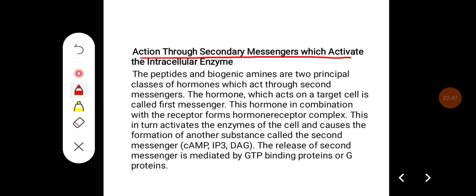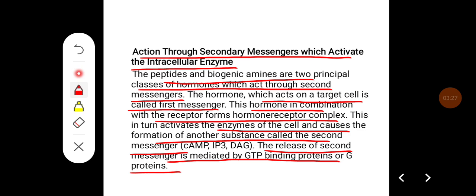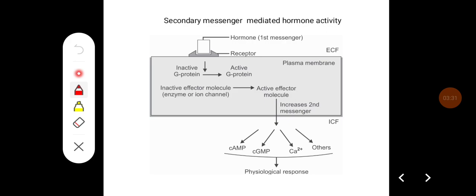Action through secondary messengers activates the intracellular enzyme. Peptides and biogenic amines are two principal classes of hormones which act through second messengers. The hormone which acts on the target cell is called the first messenger. This hormone in combination with the receptor forms a hormone-receptor complex, which in turn activates enzymes of the cell and causes the formation of another substance called the second messenger — for example, cyclic AMP, IP3, or diacylglycerol. The release of the second messenger is mediated by GTP-binding proteins, also called G proteins.